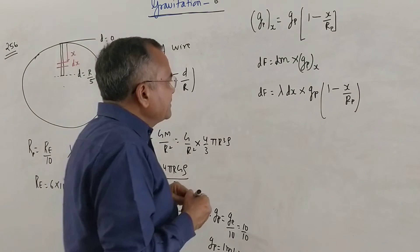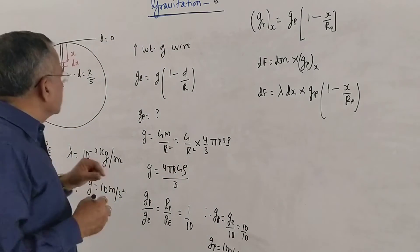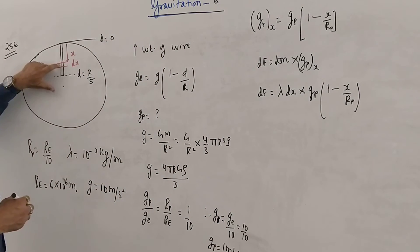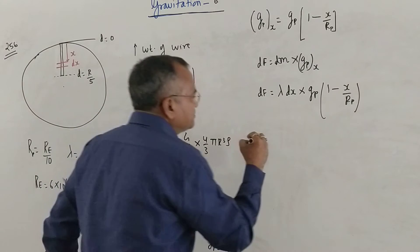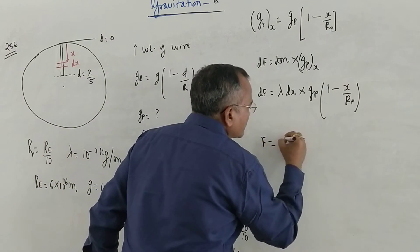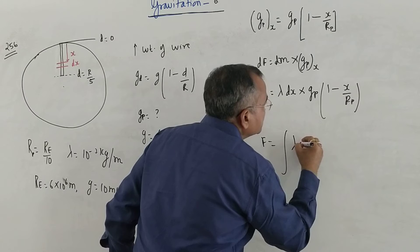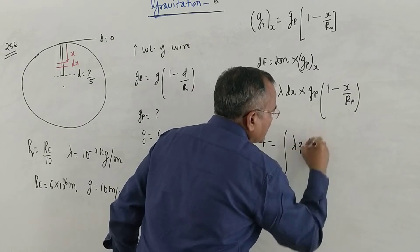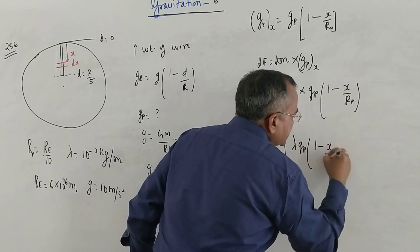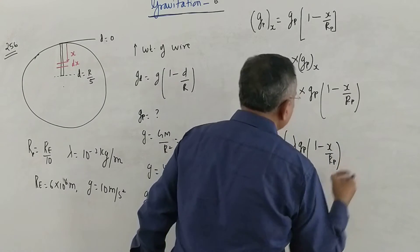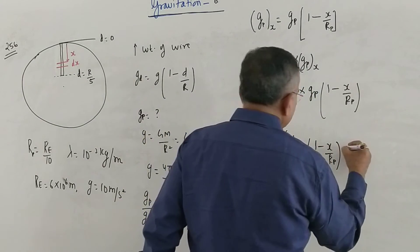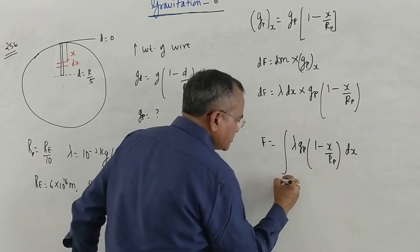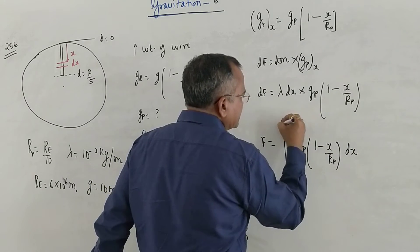To find the total force, integrate λ × g_p × (1 − x/r_p) dx between the limits 0 and r_p/5. The integration gives: λ × g_p × [x − x²/(2r_p)] evaluated between the limits.